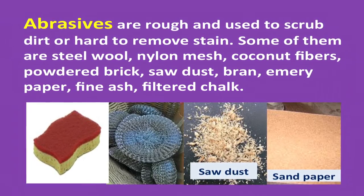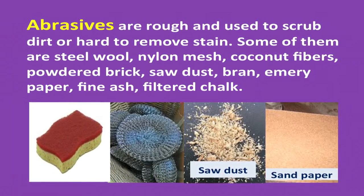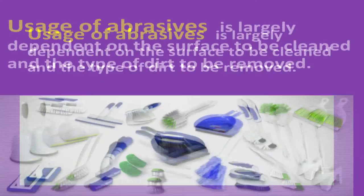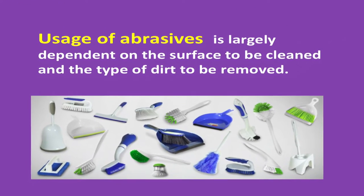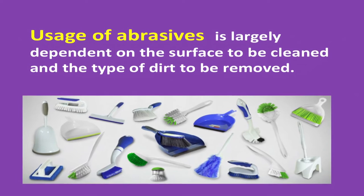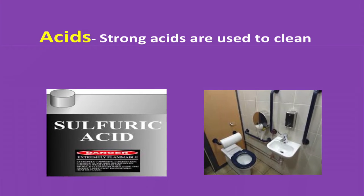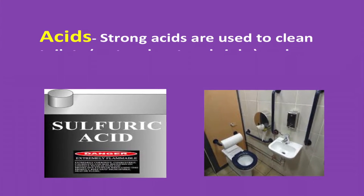Abrasives include sand, finely powdered brick, sawdust, wheat bran, emery paper, fine ash, and filtered chalk. Besides these, steel wool, nylon mesh, and coconut fibers are also used to scrub dirt. Their use depends on the surface to be cleaned and the type of dirt to be removed.